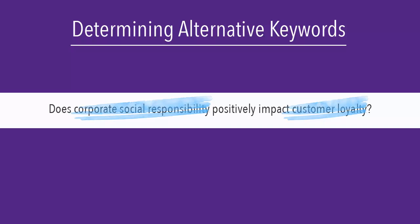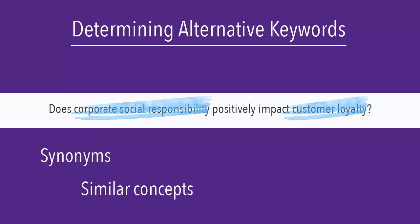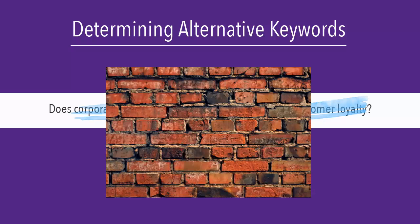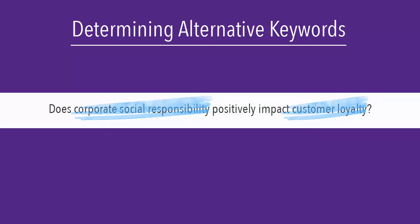After identifying your keywords, you should come up with alternative keywords. These alternative words might be synonyms, similar concepts, or words that are more specific or more general. Having a variety of keywords on hand makes it easier for you to change your search if you hit a brick wall while looking for articles. There isn't a single magic search for your topic — you will need to do several searches to find all of the information you need. For my topic, I came up with these alternative keywords.